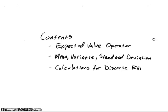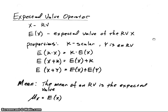In this video we're going to look at the expected value operator and then the use of the expected value operator to find the mean, variance, and standard deviation, and then also how to calculate those values for discrete random variables. So let's look at the expected value operator first. We're assuming x is a random variable, and the expected value operator we'll define as E, the function E, with x as the random variable inside. And that's what we'll call the expected value.